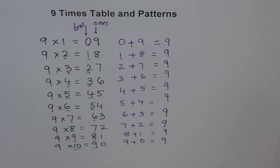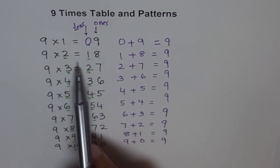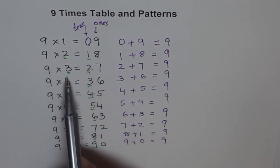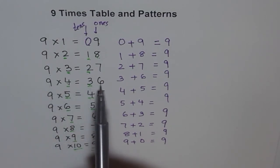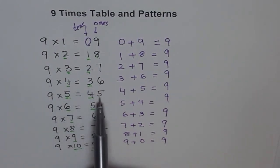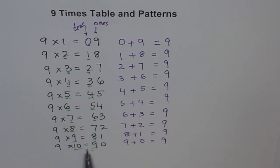So many patterns we have seen in the 9 times table. Now I think you know your 9s. 9 times 1 is 9. 9 times 2 is 18. 9 times 3 is 27. 9 times 4 is 36. 9 times 5 is 45. 9 times 6 is 54. 9 times 7 is 63. 9 times 8 is 72. 9 times 9 is 81. And 9 times 10 is 90. I hope you know your 9s by now. Enjoy your 9s! Bye bye.